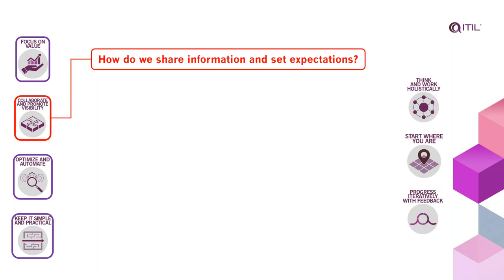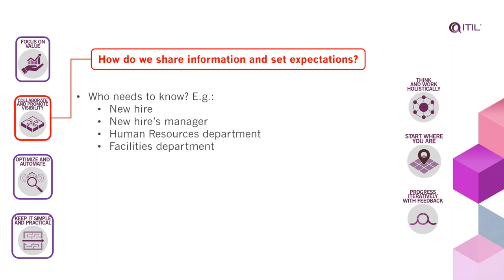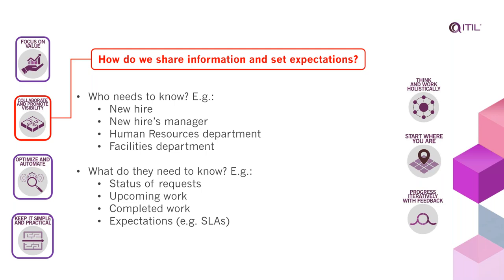Collaborate and promote visibility asks: how do we share information and set expectations internally and externally? The new hire wants to know when their equipment will arrive; the manager wants to know when their new employee will be productive; HR and facilities need status updates. As a manager, I want to know where in the overall flow my new hire onboarding has reached. Facilities may need early sight of onboarding numbers to plan for desks and office furniture. Different people need to know different things for different reasons.